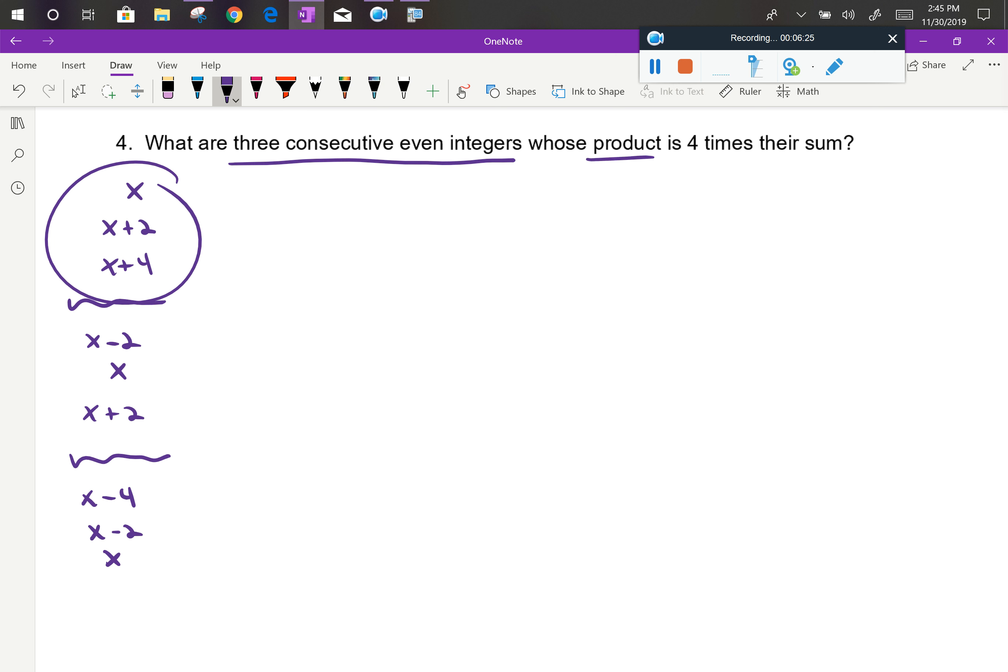It says their product. Well, remember product means multiply, so multiply the three numbers together. Is is equals four times their sum, so four times the sum, adding them together. So now I can see I've got a big mess. This isn't a factored form. If I'm gonna solve, I've gotta get zero on one side, so I've gotta do some multiplying here.